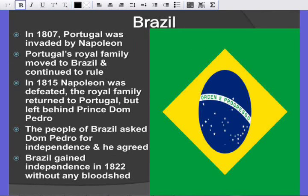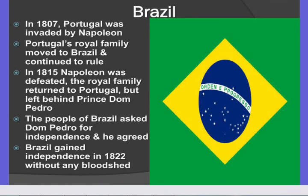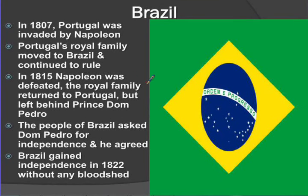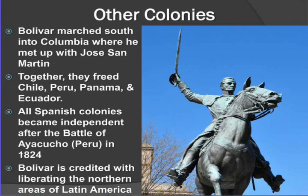Brazil: in 1807, Portugal gets invaded by Napoleon. Portugal's royal family moved to Brazil and continued to rule. In 1815, Napoleon gets defeated and the royal family returns to Portugal, but they leave behind Prince Dom Pedro. The people of Brazil ask Pedro for independence — he agrees — and Brazil gains independence without any bloodshed. Kind of like the Glorious Revolution in England — a revolution without violence.